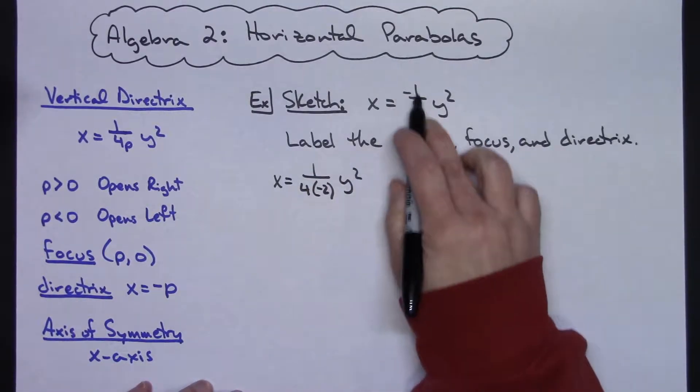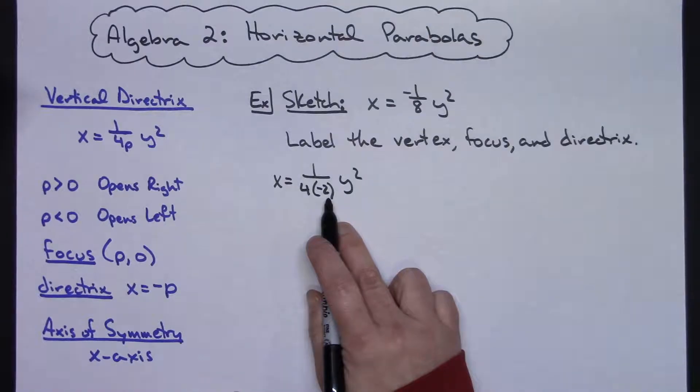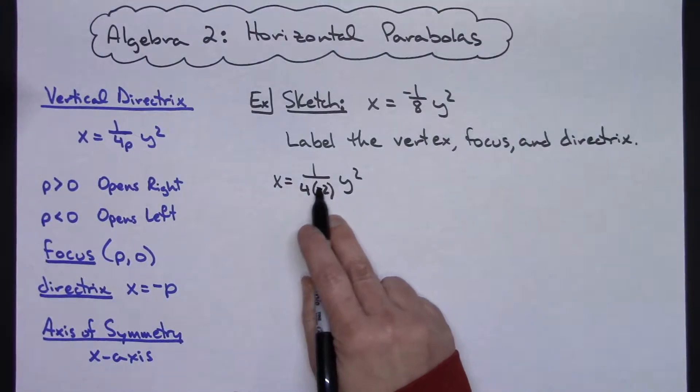If I rewrite that negative 1 eighth as 1 over 4 times negative 2, then I can see that my p is a negative 2.